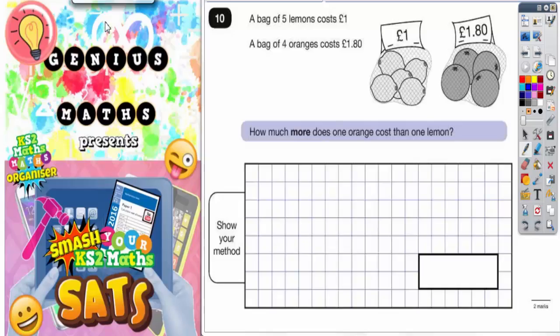Question 10: A bag of five lemons costs £1, a bag of four oranges costs £1.80. How much more does one orange cost than one lemon? So we need to figure out the cost of one orange and compare that with one lemon.